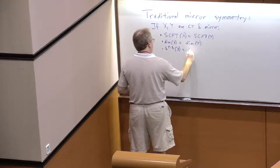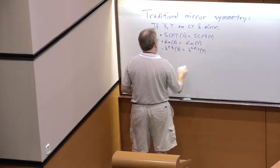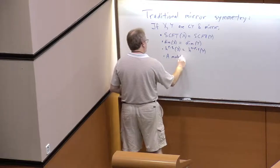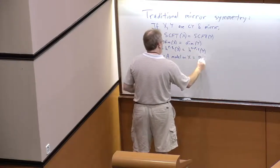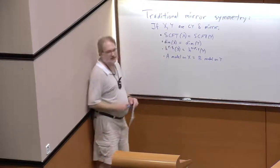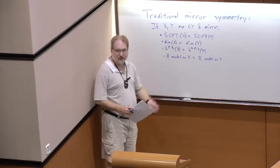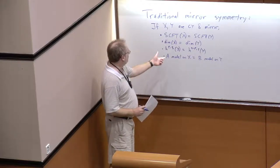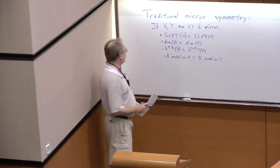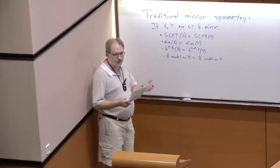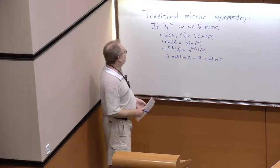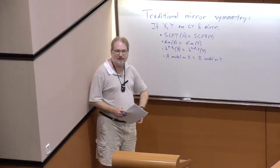The A model on one will be the B model on the other. As a consequence, the most relevant property of mirror symmetry is that quantum corrections in one will become classical computations in the other. Now, that's great and fine. There's a rich, wonderful history behind mirror symmetry, and most of it will not be relevant for today's talk.